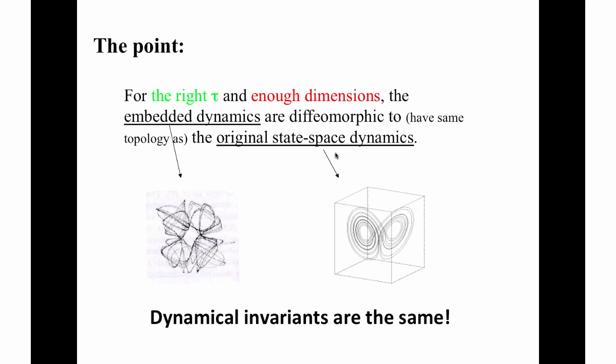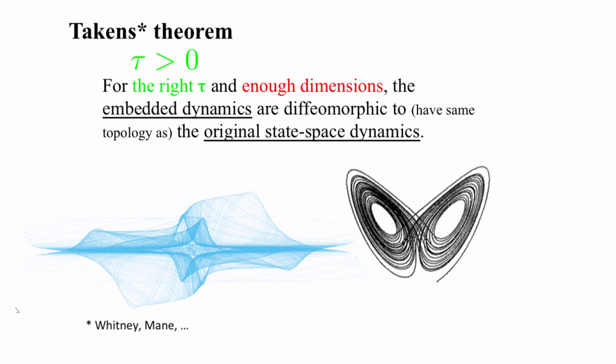Taken to an extreme, this implies that I could stick a thermometer outside my office window and use delay coordinate embedding to reconstruct the dynamics of the weather of the Western Hemisphere. Now, why that isn't practical goes back to the red-colored words on this slide. To get the topology right, you have to use enough axes in the reconstruction space. The original theorems require that M has to be at least twice as many as the number of axes in the original system. In other words, it is sufficient to establish that the reconstruction is a true embedding, that is, it's topologically correct, if you use at least twice as many comb teeth as there are state variables in the original system. Again, though, that's not something you know, and that's a problem.